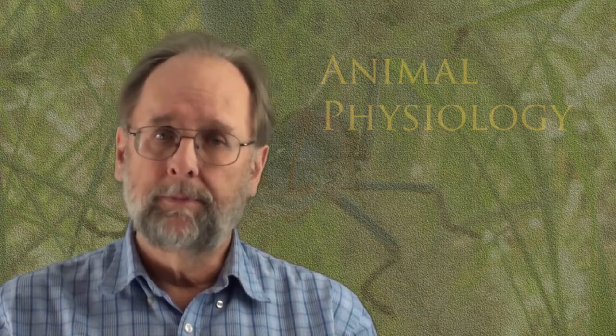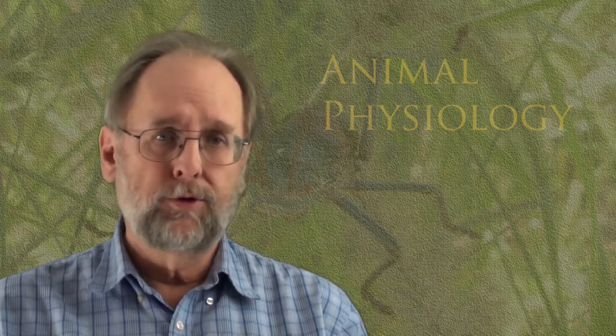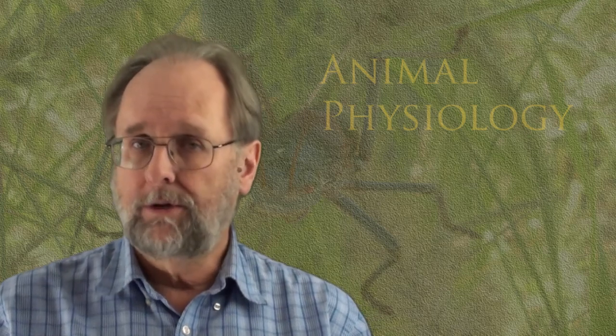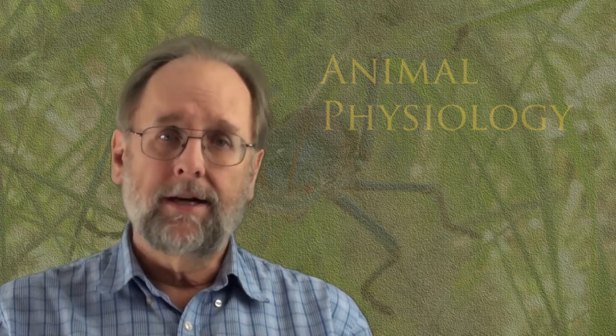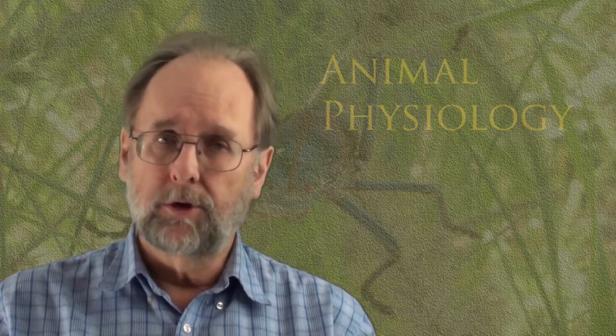We now have at least three, possibly four, types of gas exchangers that we can now compare. These are the countercurrent gas exchanger of the fish gill, the sac-like tidal lungs of the lower vertebrates, the alveolar lungs of the mammals, and the cross-current gas exchangers of birds. We can now start to make some comparisons among them, and from this we may gain some insights into what has driven the evolution of the gas exchangers of vertebrates.